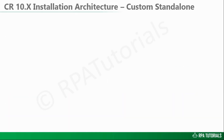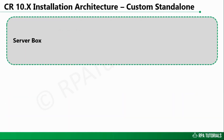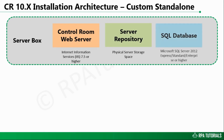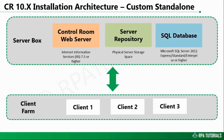The custom standalone mode has a similar architecture to the Express mode, with all three building blocks hosted on the same machine. However, it gives you the flexibility of custom settings for the different components of the Control Room. For example, you can choose where to set up the repository, set up database and database users as per your requirement, and choose between non-active directory or active directory enabled Control Room, etc.